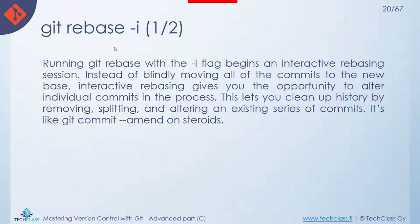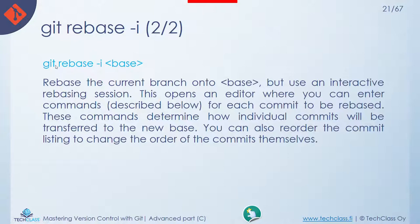Git rebase also has an option: -i (interactive). Instead of applying all those commits, it lets you manipulate and clean up the history of those commits. It's an advanced option on top of an already advanced command — if you're interested, you can find out more. The actual command is git rebase -i followed by the base.